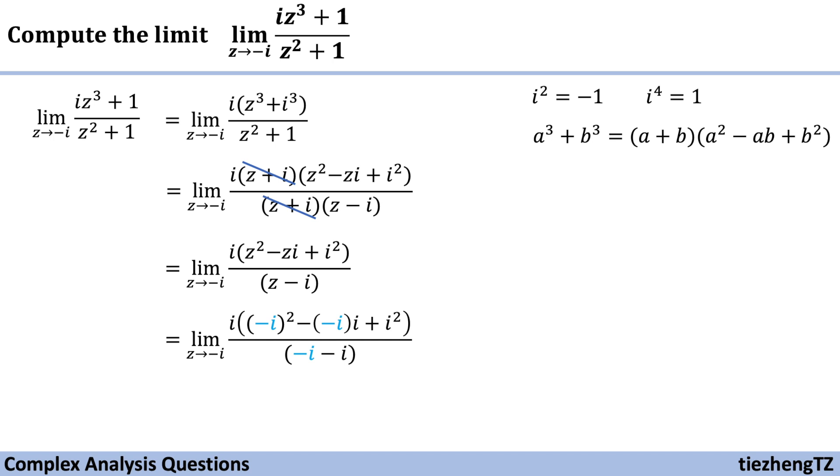So we have i times [(-i)² - (-i) times i + i²] over (-i - i), and then we just do the simple math.